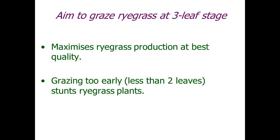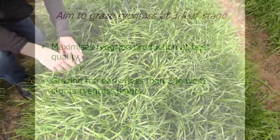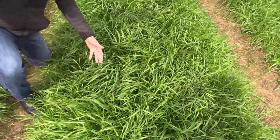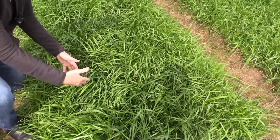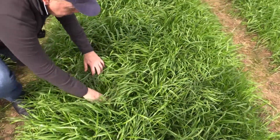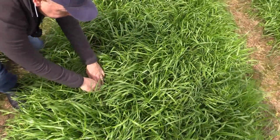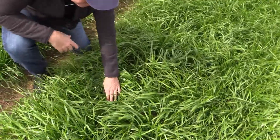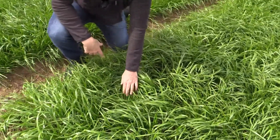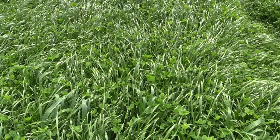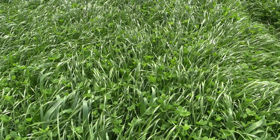We don't want the pasture to be so heavy that it's shading the bottom of the sward. We need sunlight to get in at the bottom to help create tillers on ryegrass. So we try to avoid canopy closure if at all possible.